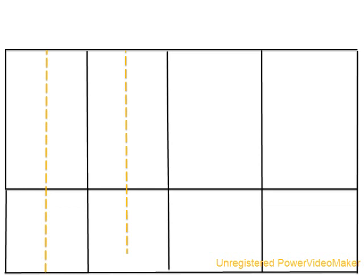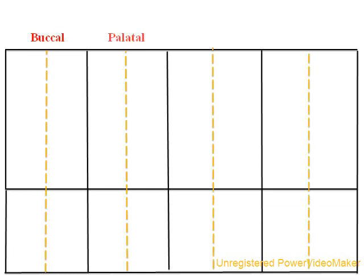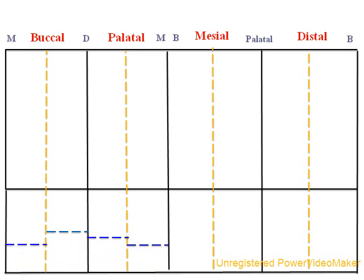First we will draw the four aspects: buccal, palatal, mesial and distal. Occlusal aspect of upper first molar — the geometric outline is rhomboidal.